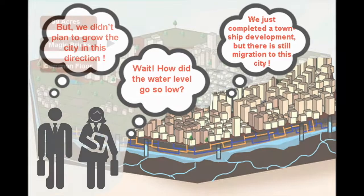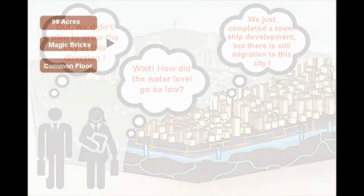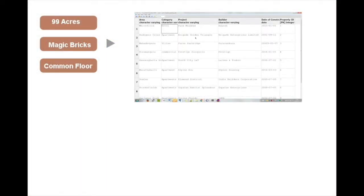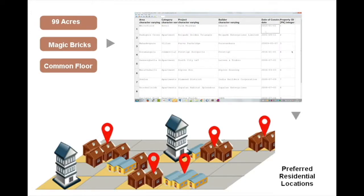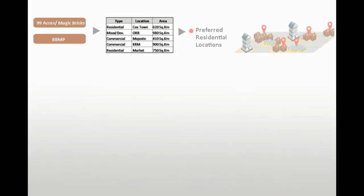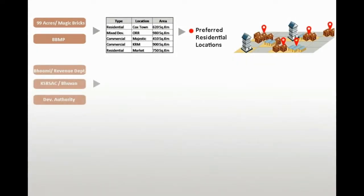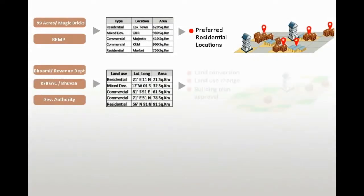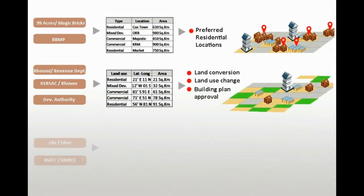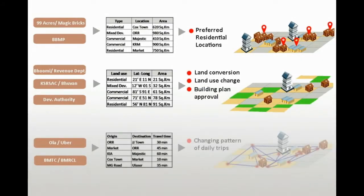An open observatory tries to answer such complex questions by connecting multiple large datasets over a geospatial platform. It churns out analysis continuously at different scales. For example, dynamic data from property finder sites and cab aggregator platforms when mapped with land conversion, building permission and industrial location databases can generate very useful geospatial analysis.